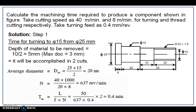This is a university exam question: calculate the machining time required to produce a component shown in figure. Take cutting speed as 40 meters per minute for turning and 8 meters per minute for thread cutting. Feed for turning is 0.4 mm per revolution. The initial diameter is 25 mm and the final diameter is 15 mm — a difference of 10 mm — so we cannot cut in a single pass and need to plan accordingly.